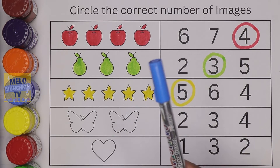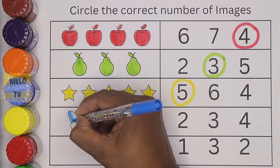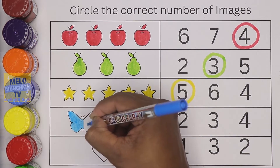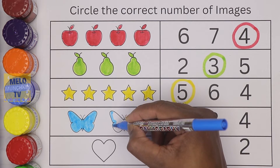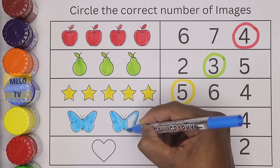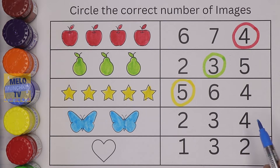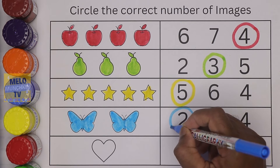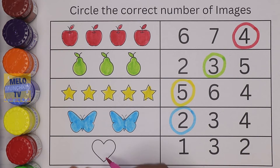Next, I'll choose blue color and color these butterflies. These are butterflies, let's color and count them. This is number one, and this is number two. So two butterflies. Let's find number two — this is number four, this is number three, and this one is number two. This is the correct answer — two butterflies!